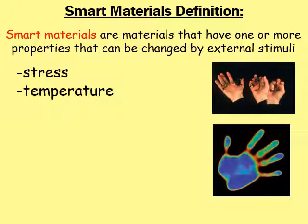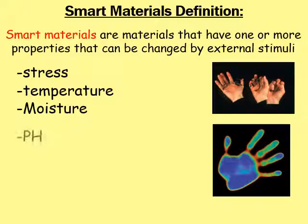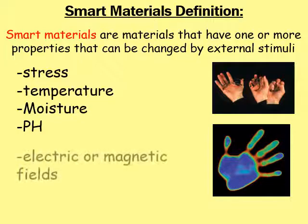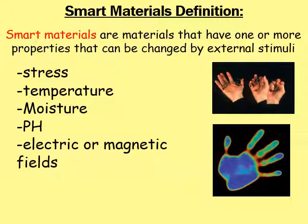You may change the external temperature which the material is experiencing, and the material's properties will change. You might change moisture, or the pH — the acidity level — that the material is experiencing could change its properties. You might apply an electronic or magnetic field to the material, and that will cause its properties to change. So at the moment this sounds very complicated, so what I'm going to do for the rest of the lesson is go through lots of different examples of these materials.